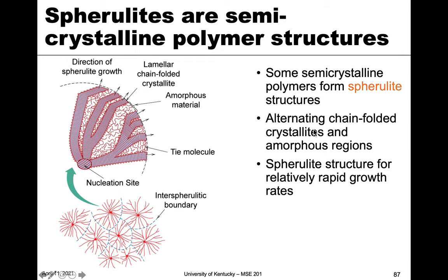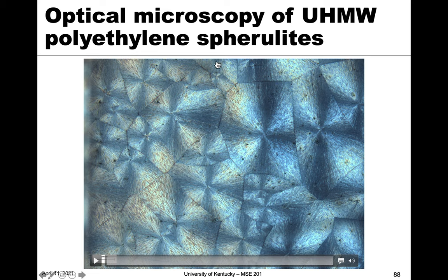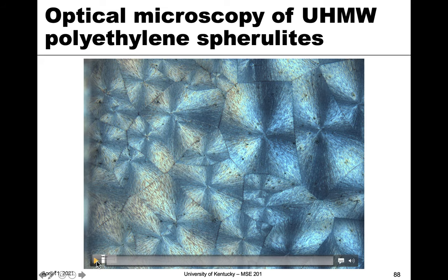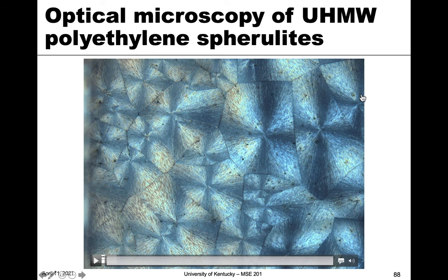Spherulites have alternating layers between crystalline and amorphous regions, and they can grow relatively quickly. We actually did this in the lab — this is an optical micrograph showing the end result, those spherulites. You can even see regions that are crystalline and amorphous. This was done with ultra-high molecular weight polyethylene. We took a video of it growing, but unfortunately it won't play right now — I'll work on getting that up on YouTube for you to view.